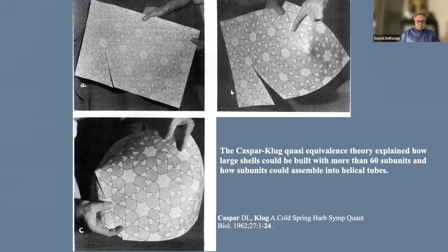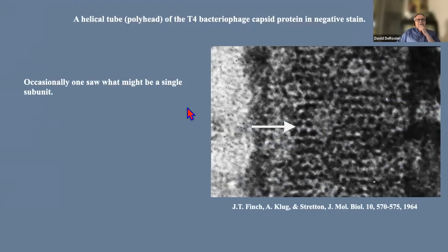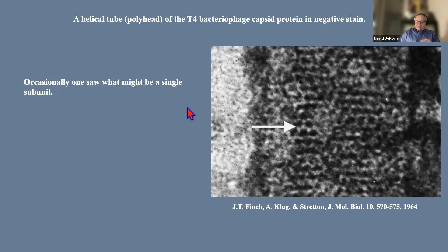This also explained how you could assemble helical tubes out of these proteins, one of several polymorphic forms. Here's a helical tube that Tony had mentioned from the capsid protein of the T4 bacteriophage head. In the early days people had these beautiful negatively stained structures — sometimes you thought you could see a subunit or a ring, but in other places you really couldn't, and the question was whether the sample was not well preserved.